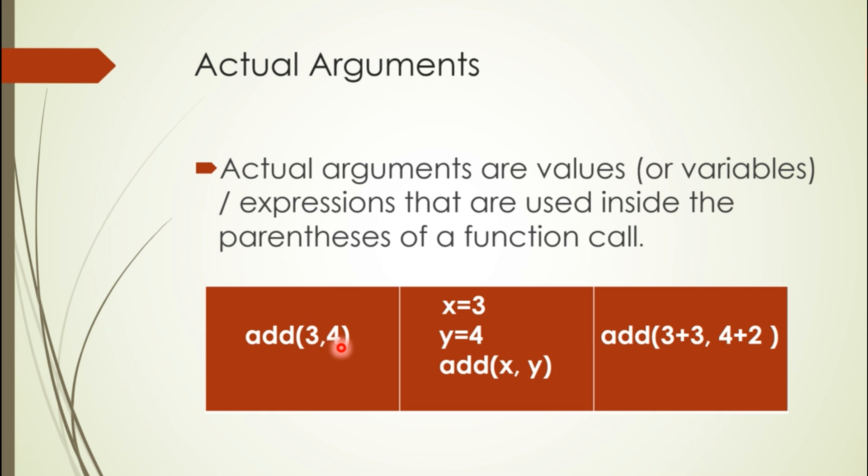Similarly, when we pass variables as actual arguments instead of values, these variables can have assignments beforehand. They can be given by the user directly or computed in the program. We can compute them in the program or directly provide them. These two variables are then passed on to the function.